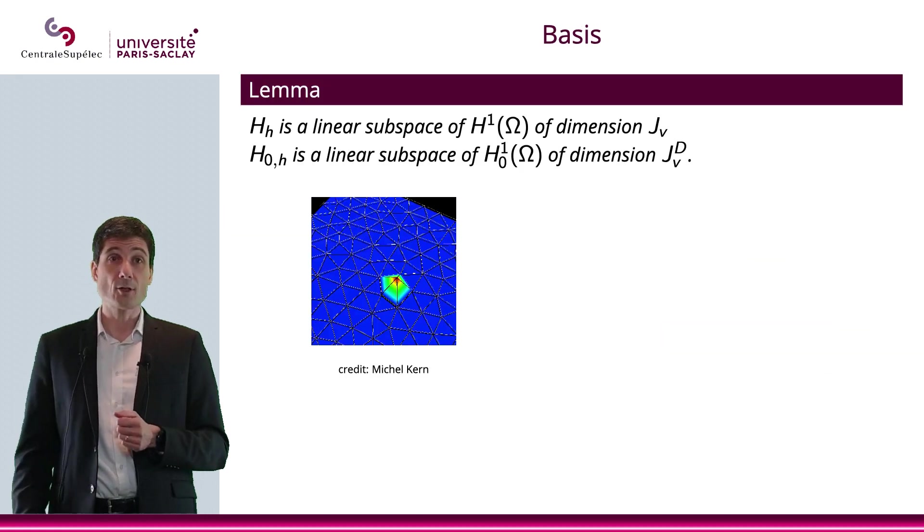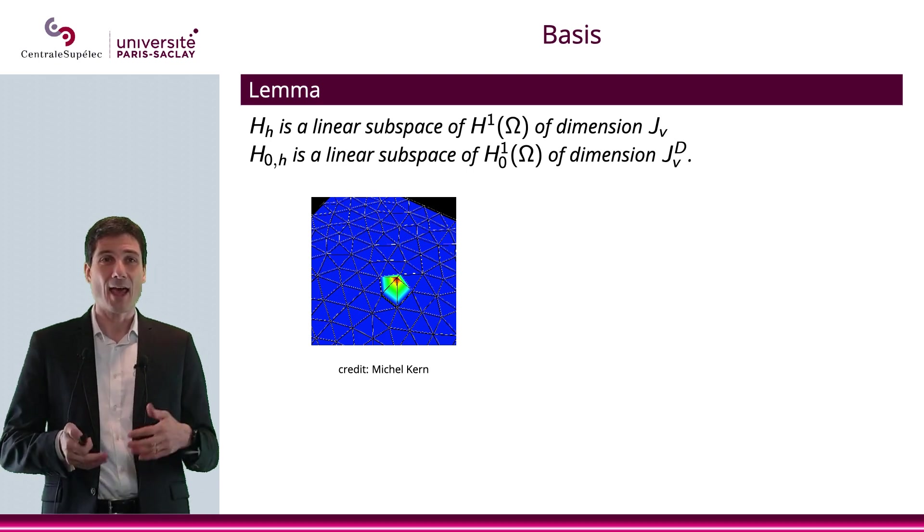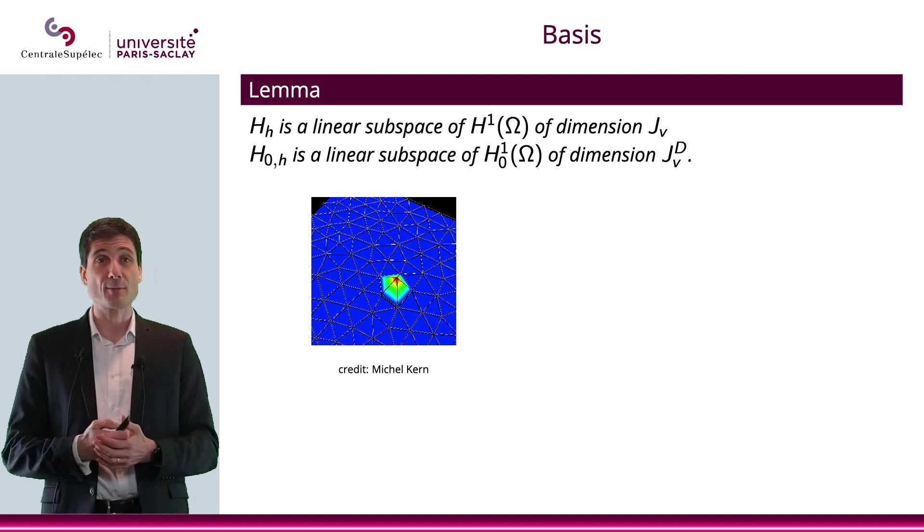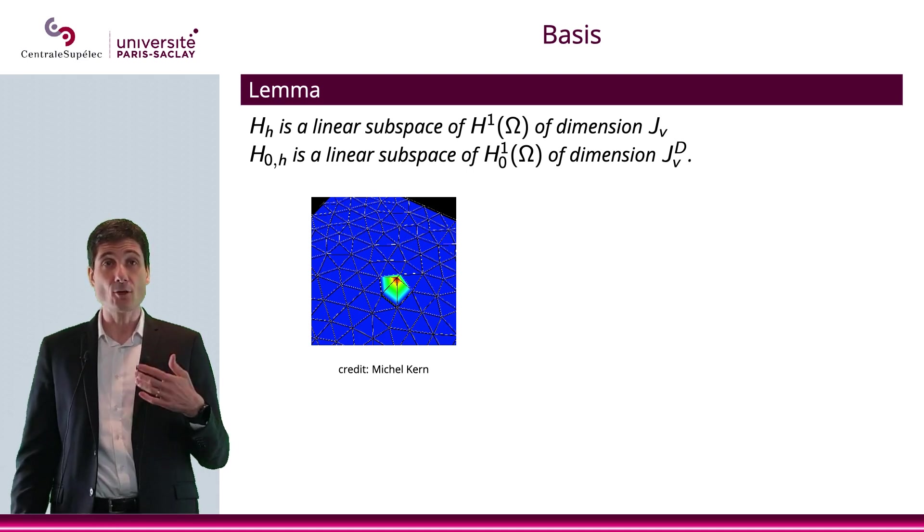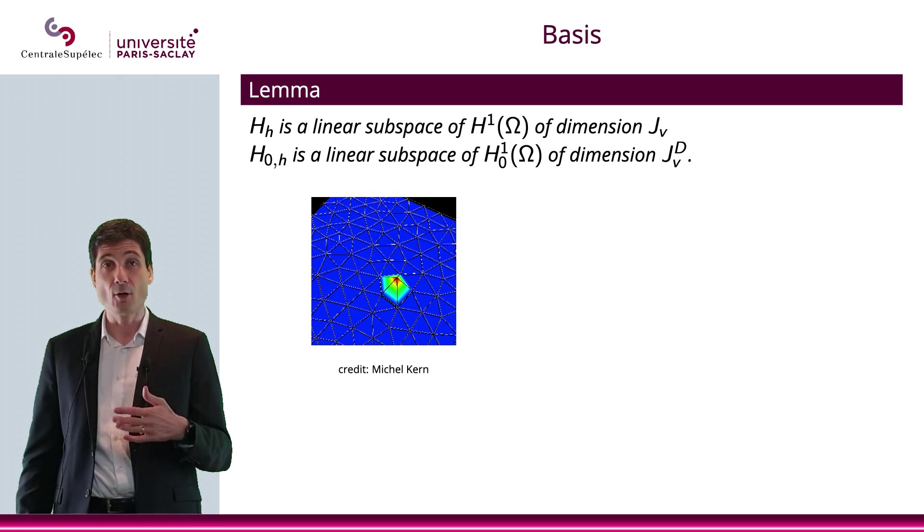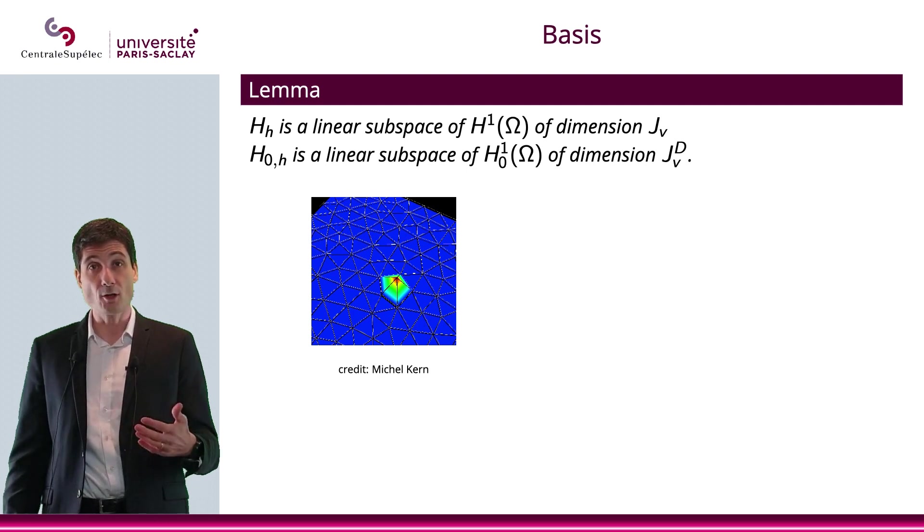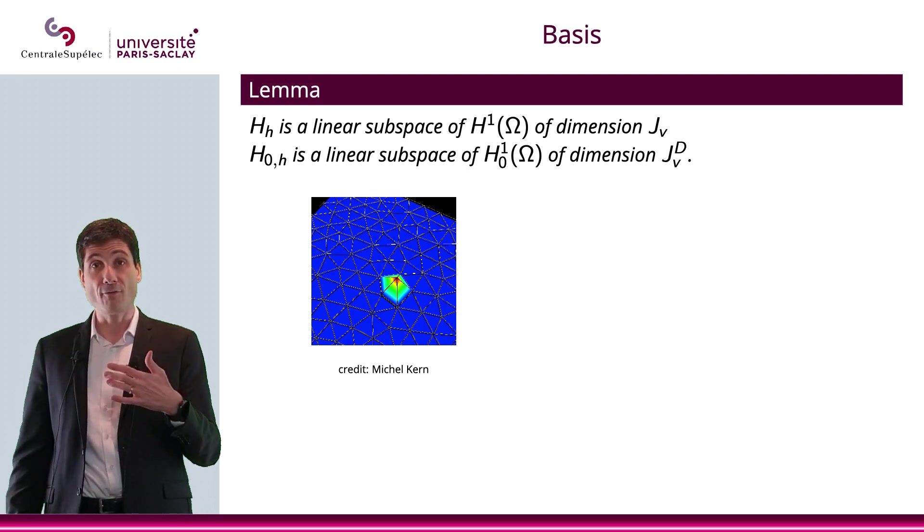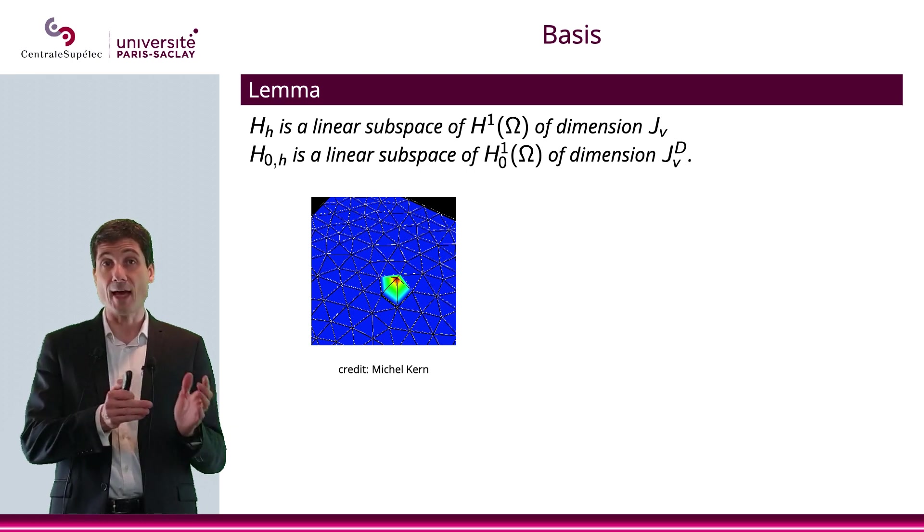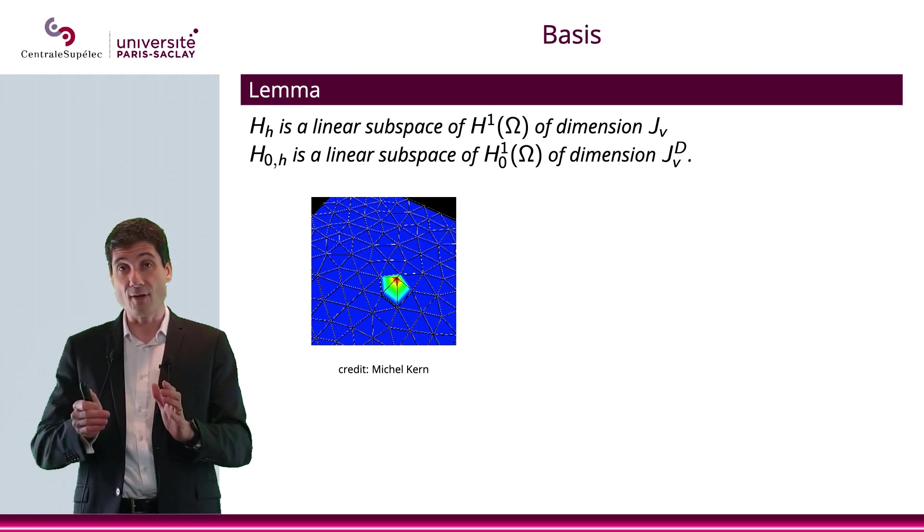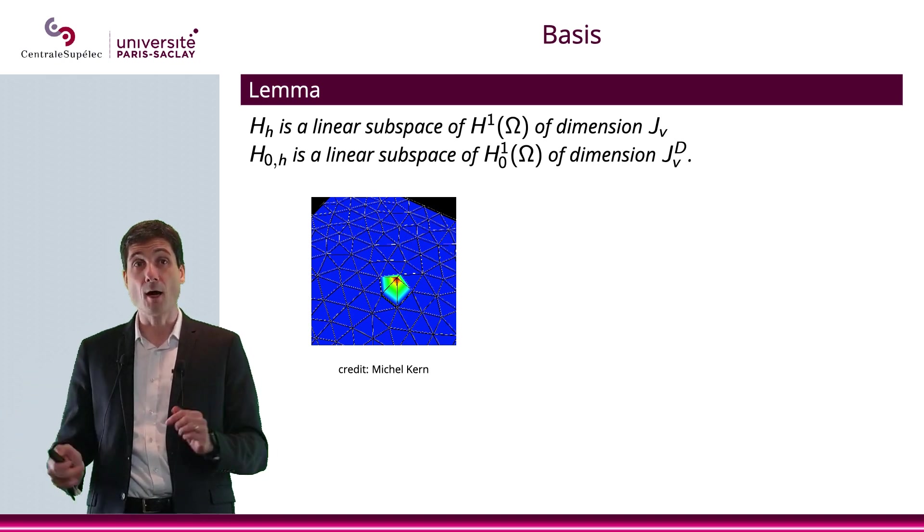Now, we're going to consider a basis for these spaces. HH is a linear subspace of H1 of dimension JV, and H0H is a linear subspace of H10 of dimension JVD. And remember, when we talked about mesh in the first videos of this chapter, we defined JV and JVD. JV is basically the number of nodes, while JVD is the number of nodes that are not on the boundary.